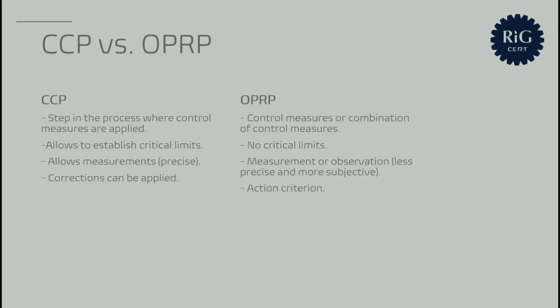OPRPs — operational prerequisite programs — are control measures or combinations of control measures applied with the same purpose: to prevent or reduce a significant food safety hazard. But unlike CCPs, we don't have a critical limit. Instead, we have measurement or observation plus an action criterion to enable efficient control of the product or process. OPRPs are used for situations where it is not feasible to measure precisely and detect a control failure. Examples include visual inspection of a raw material or manual cleaning of equipment — cases where, because precise measurement is not possible, the control of the hazard cannot be fully guaranteed.